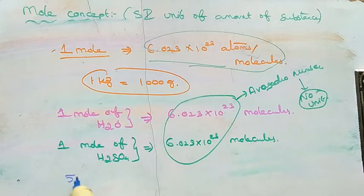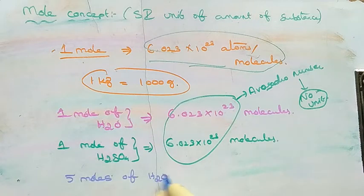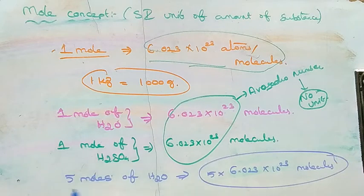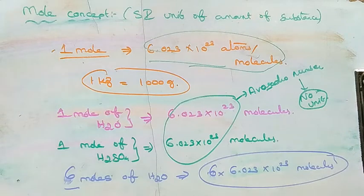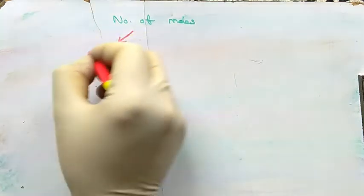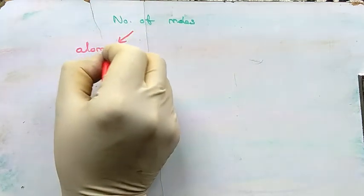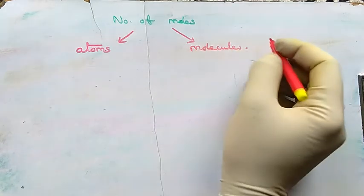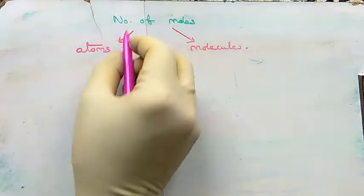To calculate the number of molecules in 5 moles of water, we multiply Avogadro's number by 5 — so 5 moles of water contains 5 × 6.023 × 10²³ molecules. For 6 moles, Avogadro's number is multiplied by 6. Number of moles is always denoted by the symbol n.